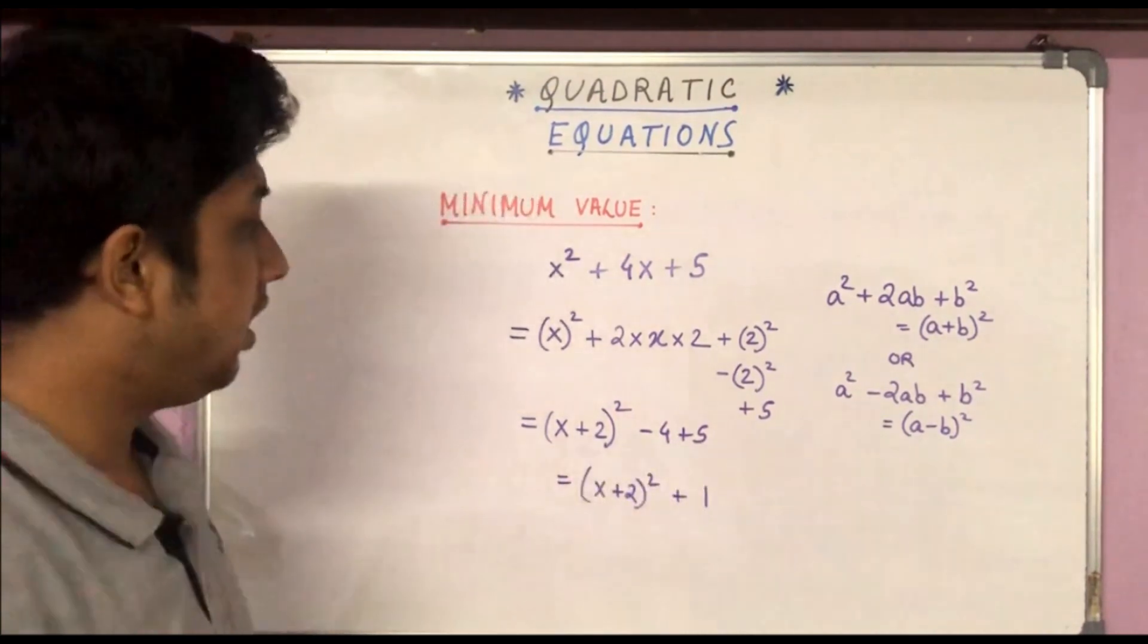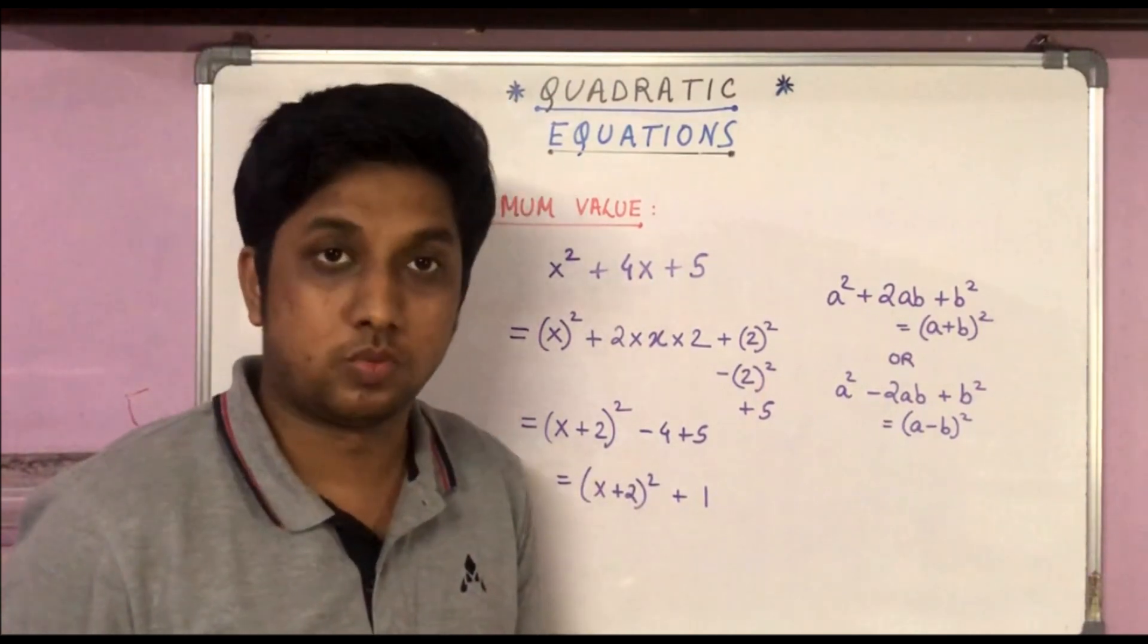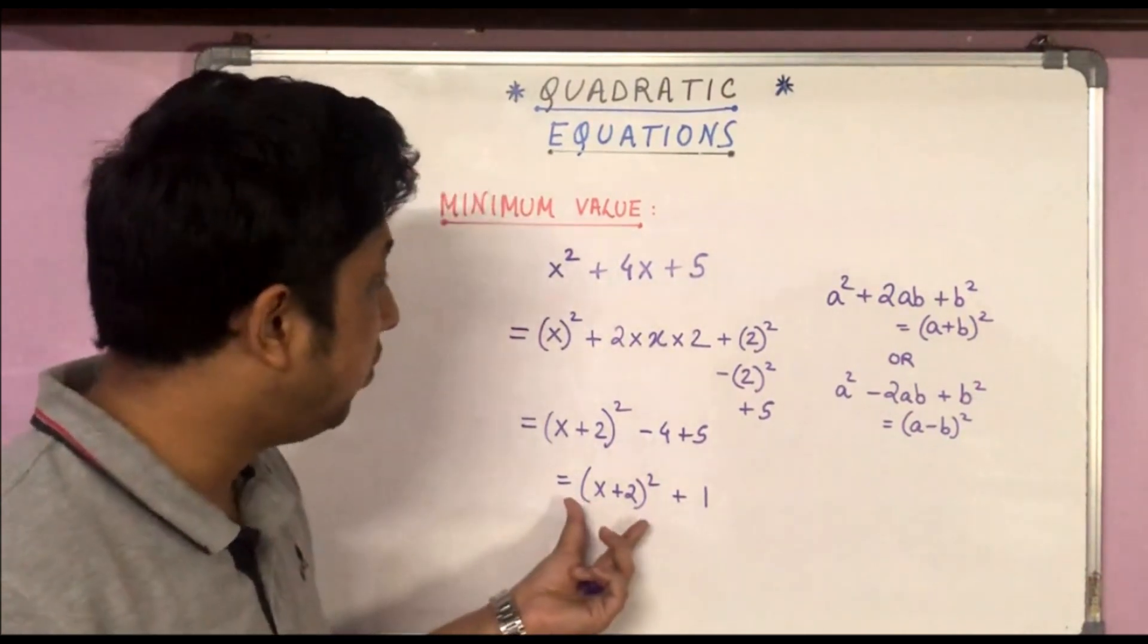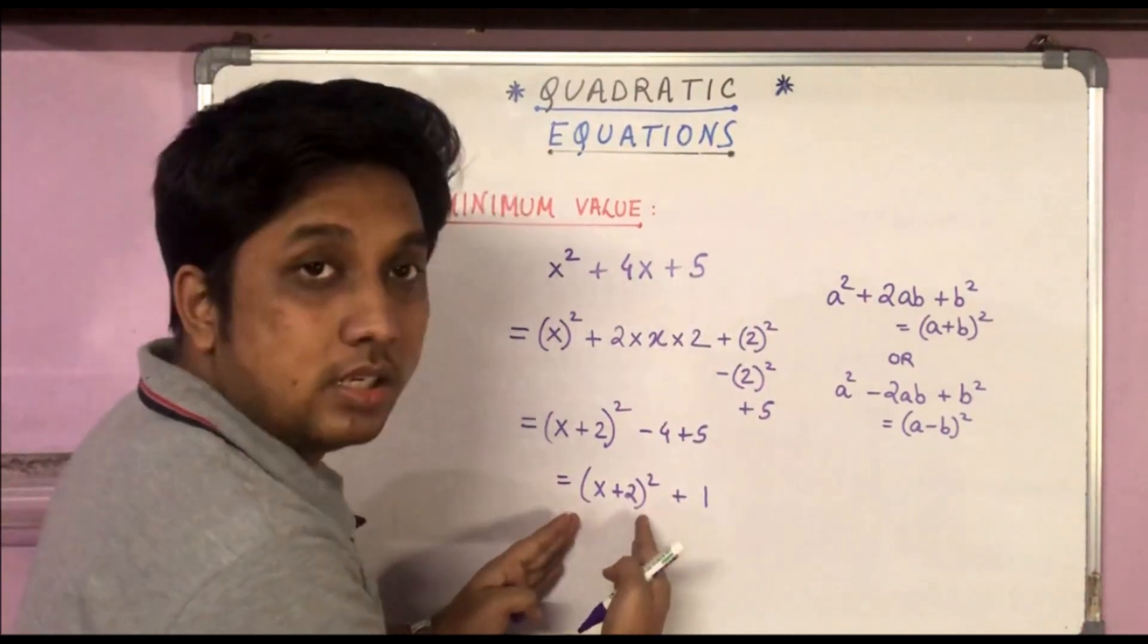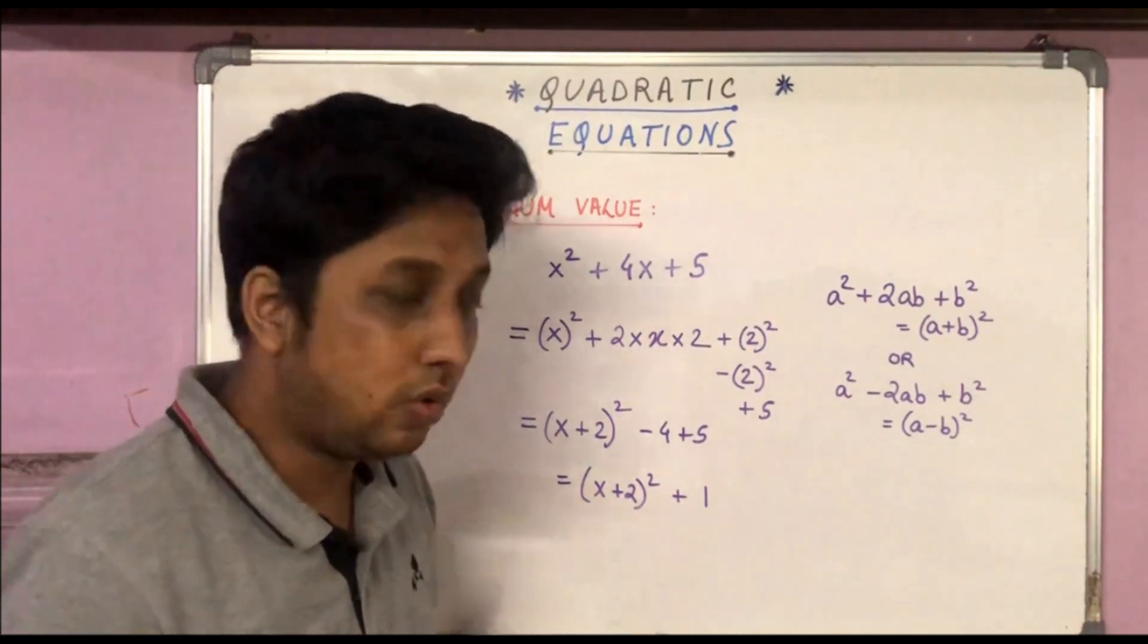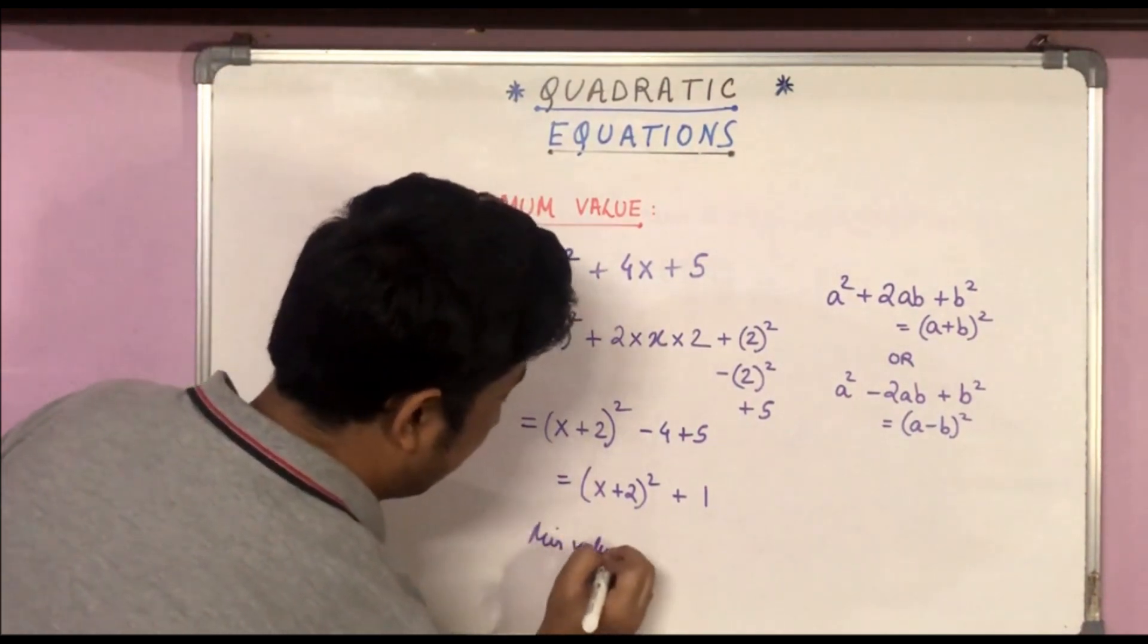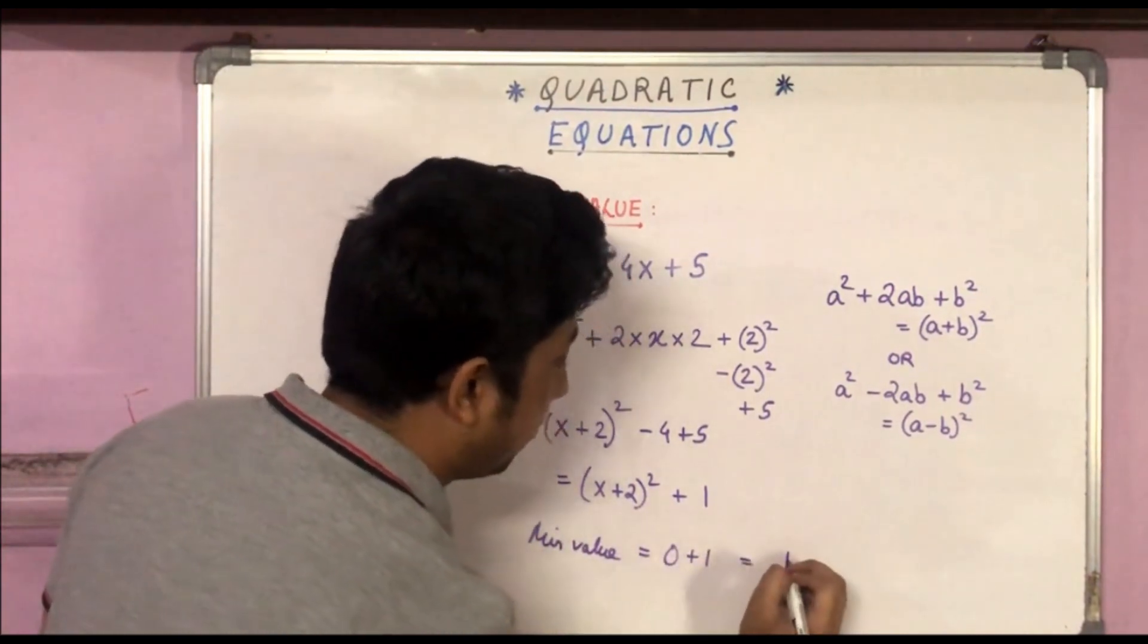Now the value of any square, the minimum value of any square is 0, because a square is either positive or it can be 0. A square of any real number cannot be negative. So the minimum value of this expression is equal to the minimum value of this square plus 1. Now the minimum value of this square (x + 2)² is 0, so the minimum value of this expression would be 0 + 1, which is equal to 1.